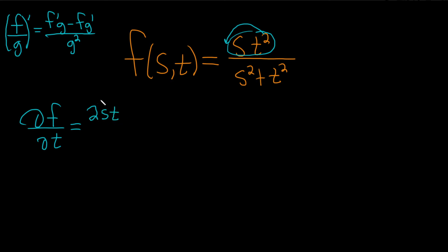That's the derivative of the top piece, and then times the bottom piece. So s squared plus t squared minus the top piece. So st squared times the derivative of the bottom. So the derivative of the s squared will be zero because it's a constant. So we just get 2t.